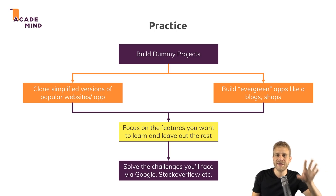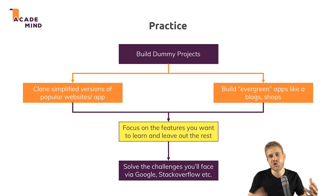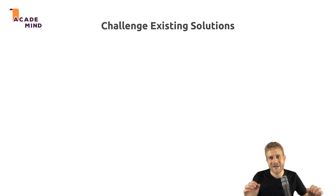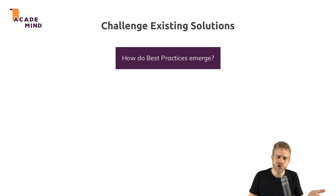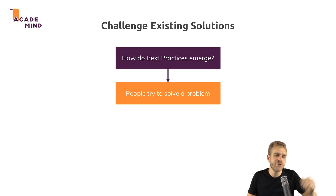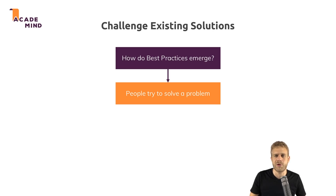Now, practicing also includes that you will implement solutions following certain patterns or best practices. And you should always challenge these existing solutions. Obviously they do exist for a good reason, and most of them might be great. But how do best practices emerge? Well, they emerge because people try to solve a problem. And chances are that this problem has already been solved before, but maybe not in a way that suffices for your exact use case, or maybe not in a way that you can or want to implement, or maybe you just want to explore other alternatives.